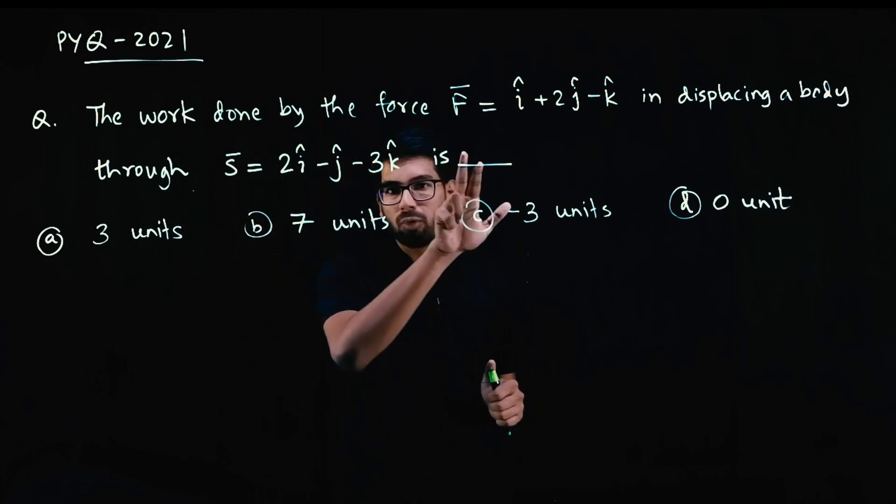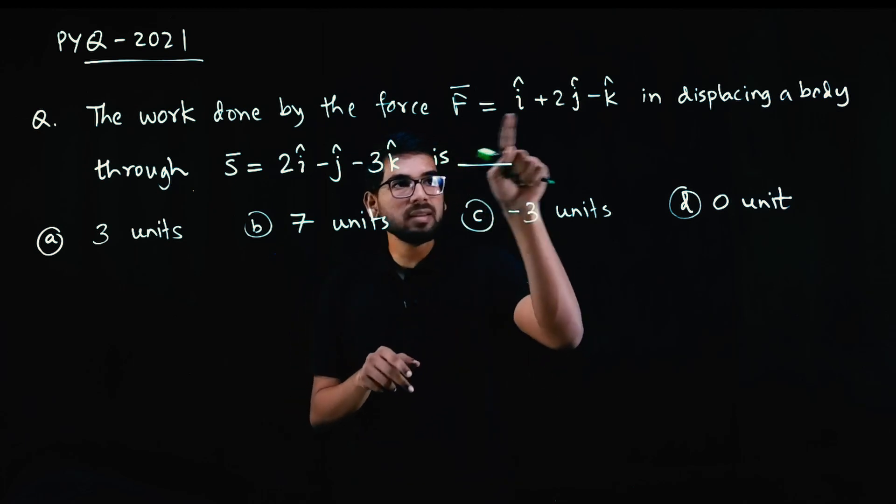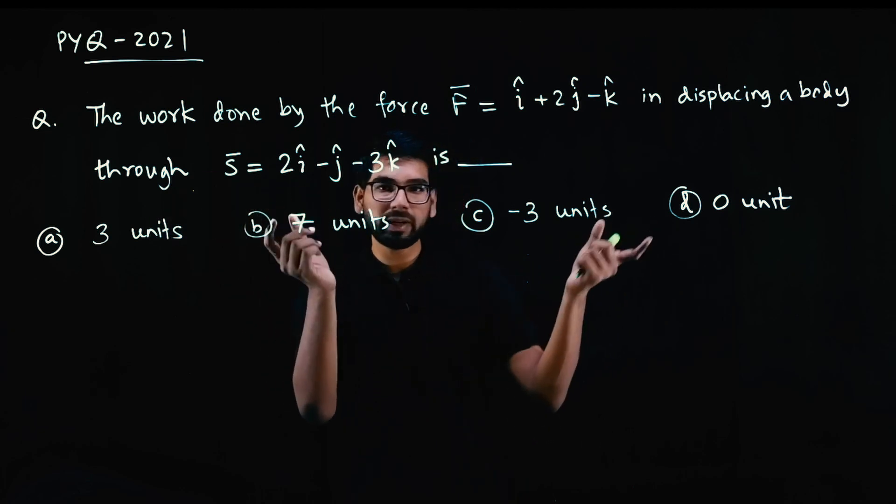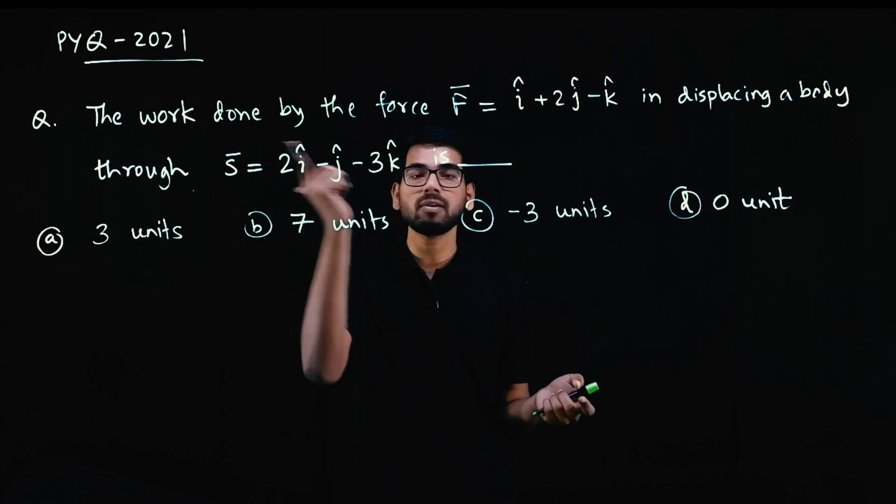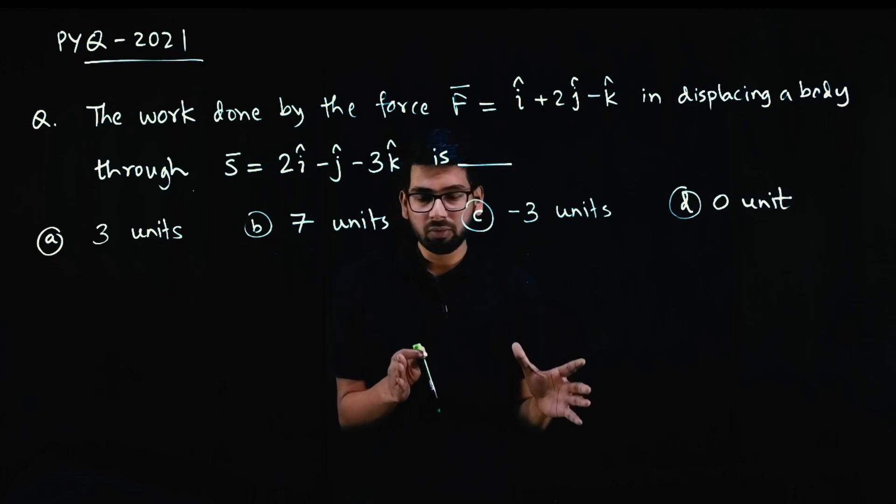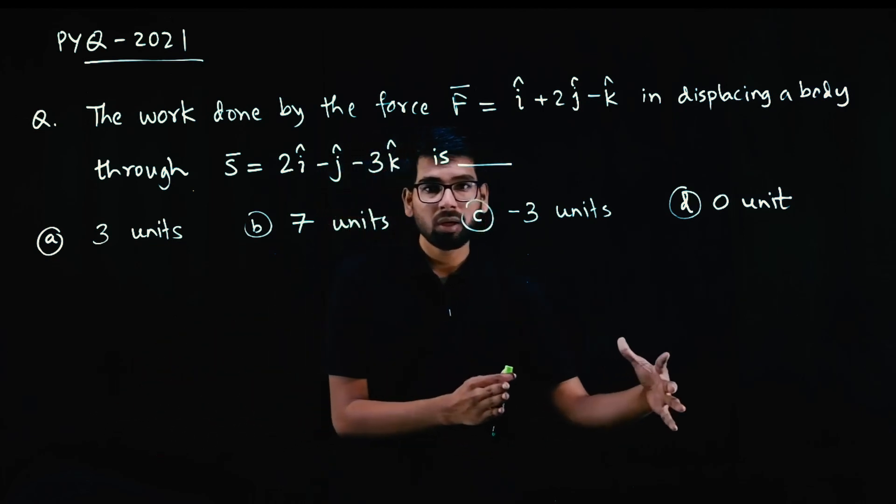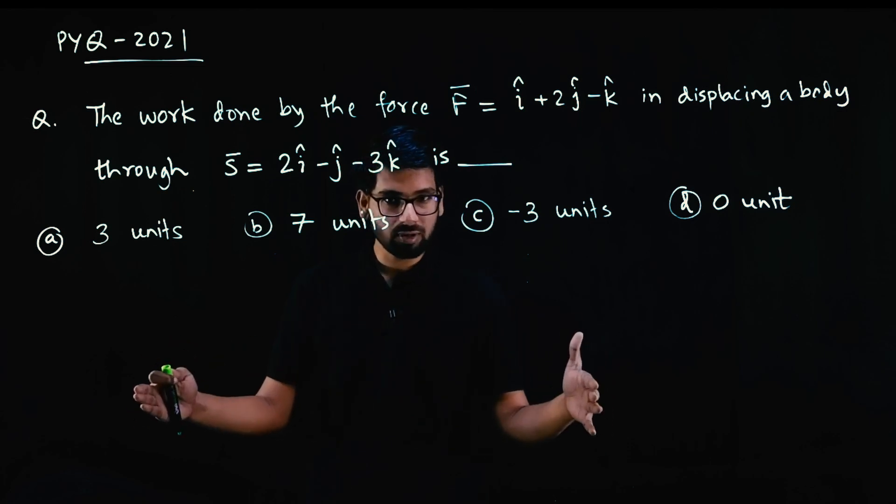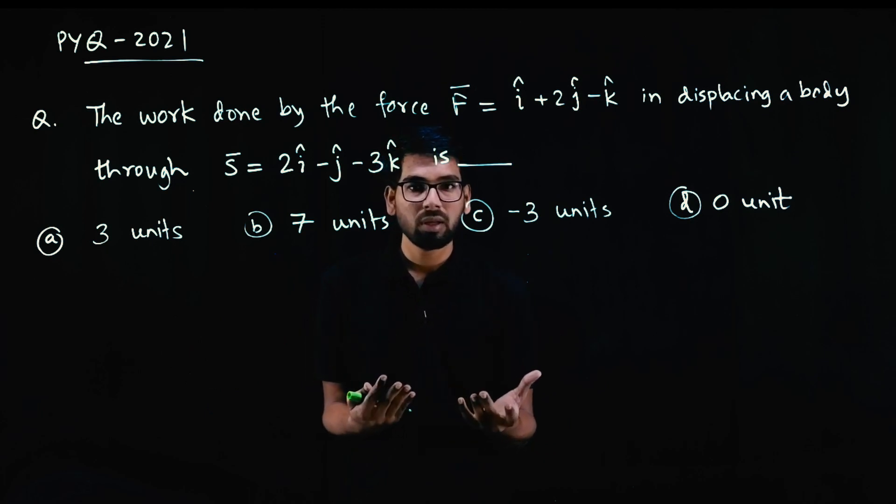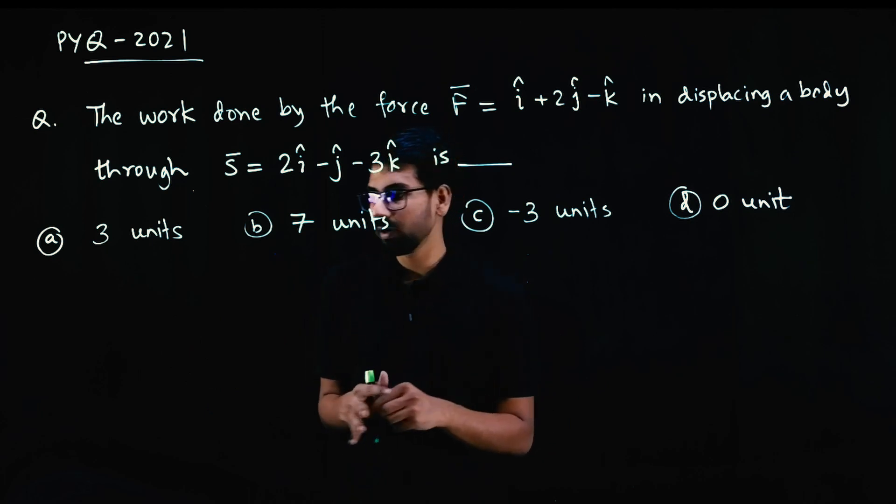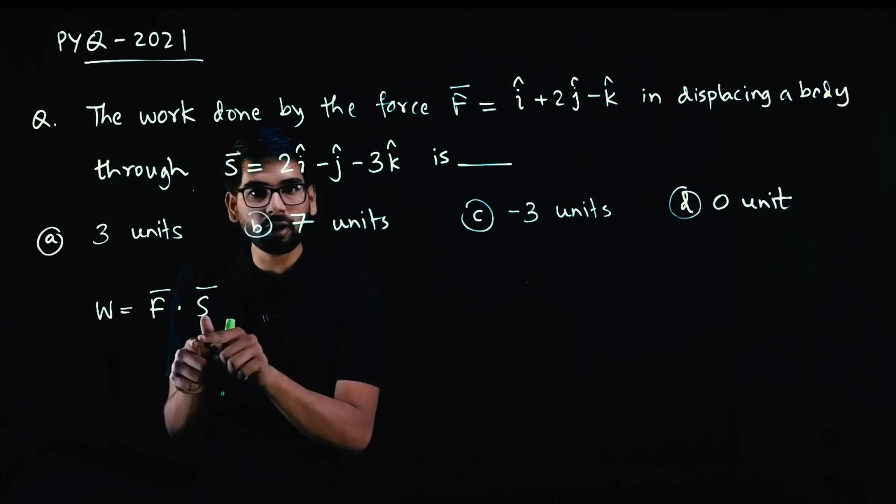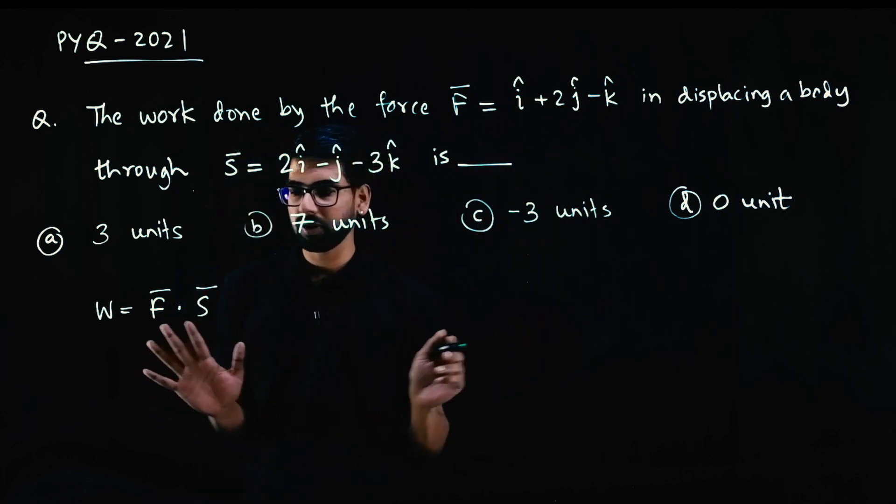The question is, the work done by the force, force is a vector F bar is this, in displacing a body through a displacement vector S bar is this. What is the work done? Given force and displacement. One object is here, it moves here. Force applied. How much it moved is the distance. How much force applied is the force. So how much work done? Work done w is simply F bar dot S bar. It is the dot product of force vector and displacement vector. Very simple. Work is a number, not a vector.